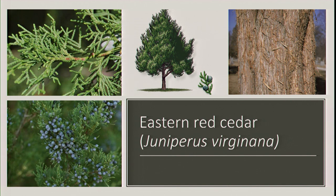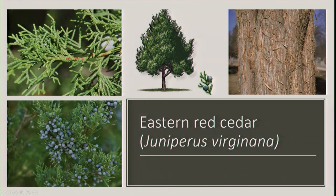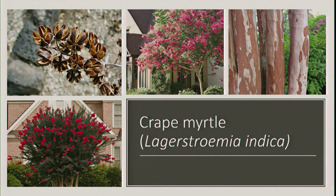Eastern red cedar — Juniperus virginiana — is actually a true juniper. ID characteristics are the bark: it has shaggy bark with a lot of sap, scale-like needles or awls, and blue juniper berries. These are evergreen but they don't hold their needles permanently — they usually lose them every three to four growing seasons. People call me asking why their pine is dropping its needles, and the answer is that it does so every few years.